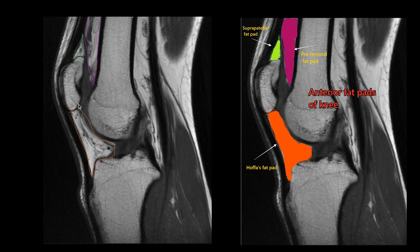These are the fat pads around the knee joint: suprapatellar fat pad, prefemoral fat pad, and Hoffa's fat pad, which lies inside the joint capsule and outside the synovium. These fat pads are innervated with nerves, so they can undergo impingement syndromes.